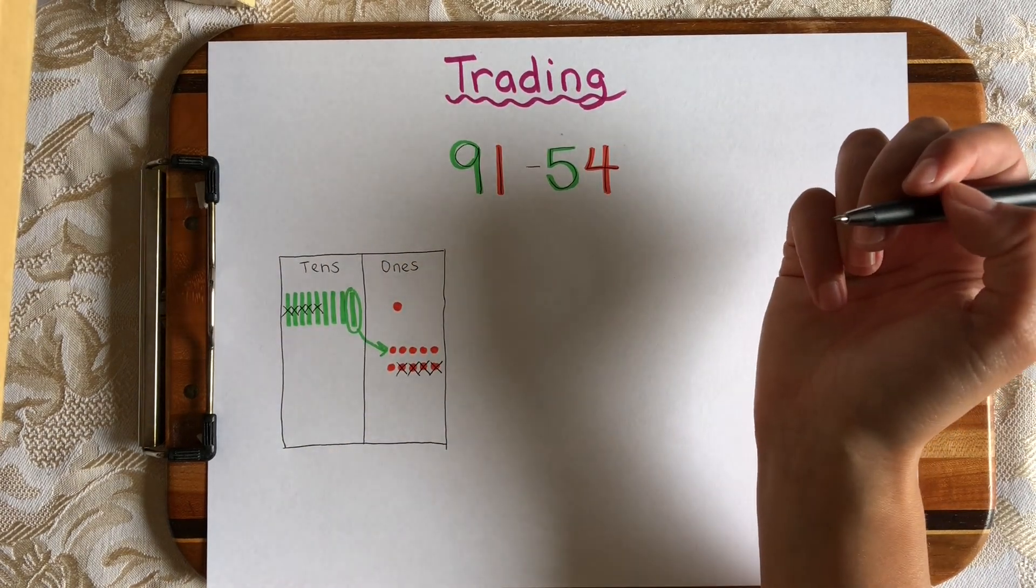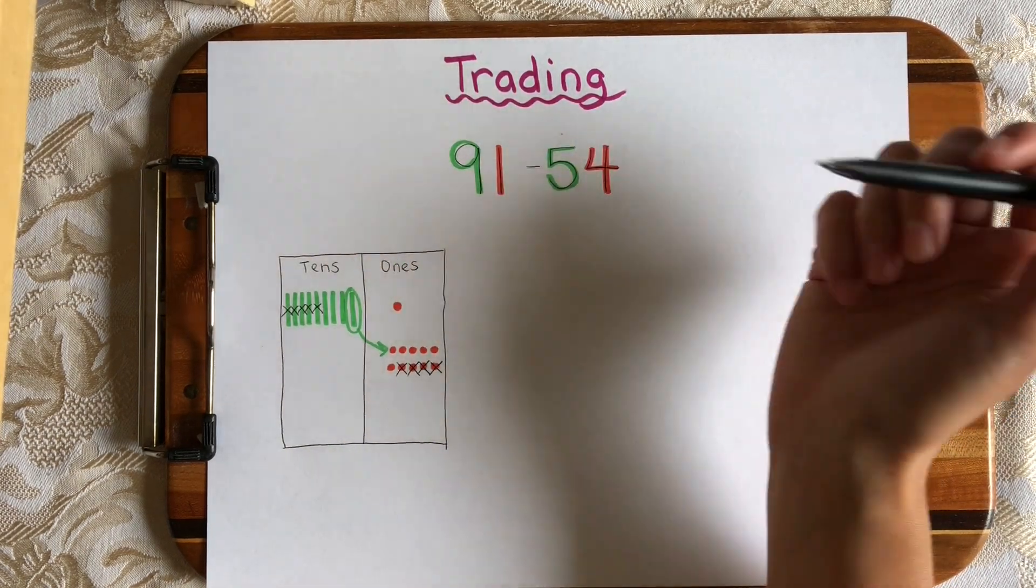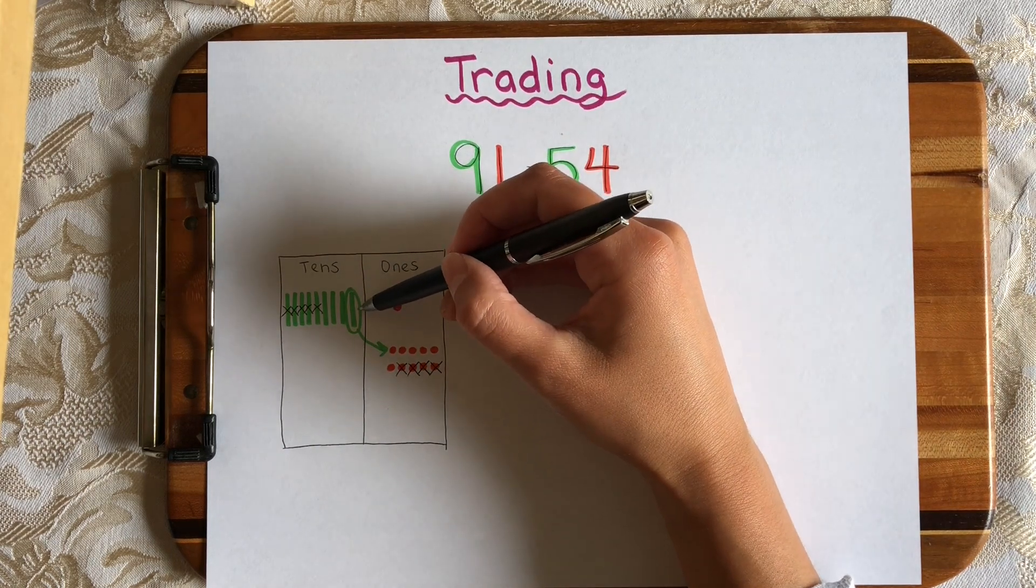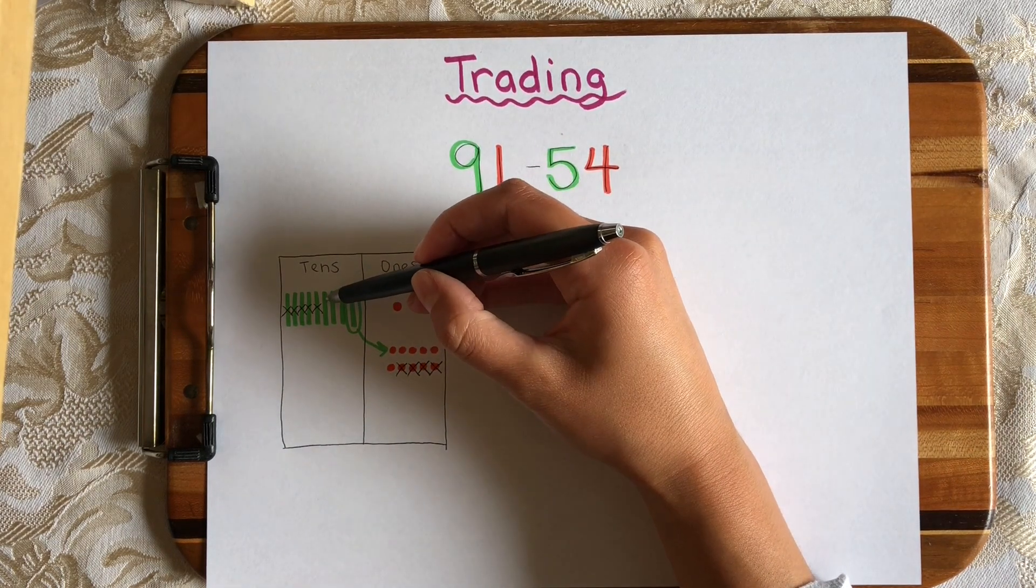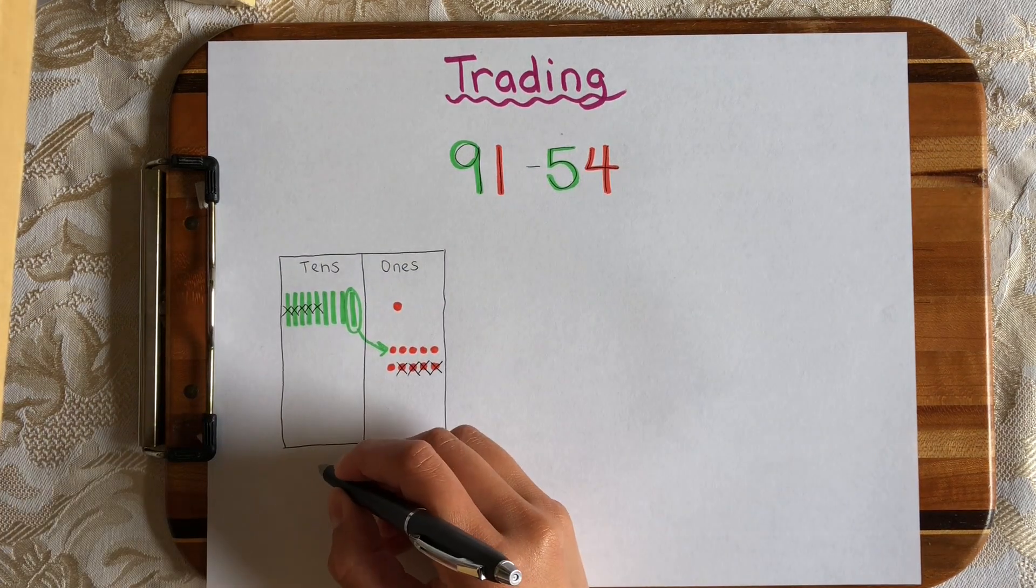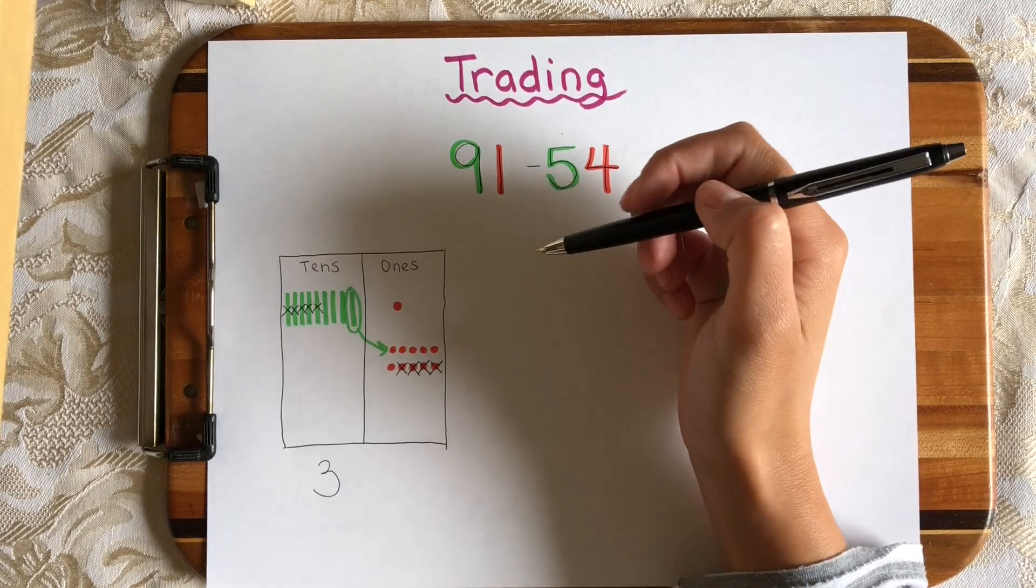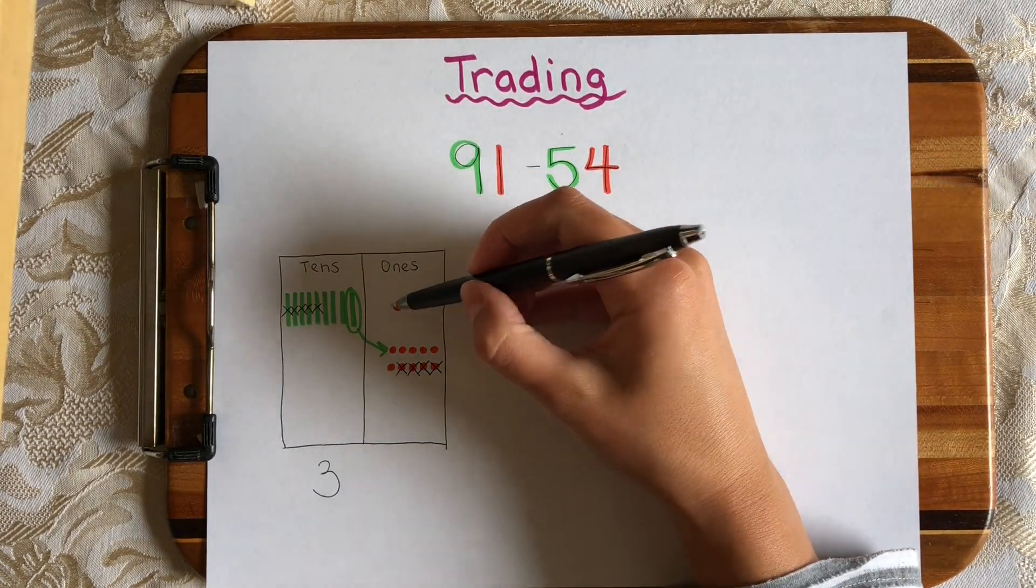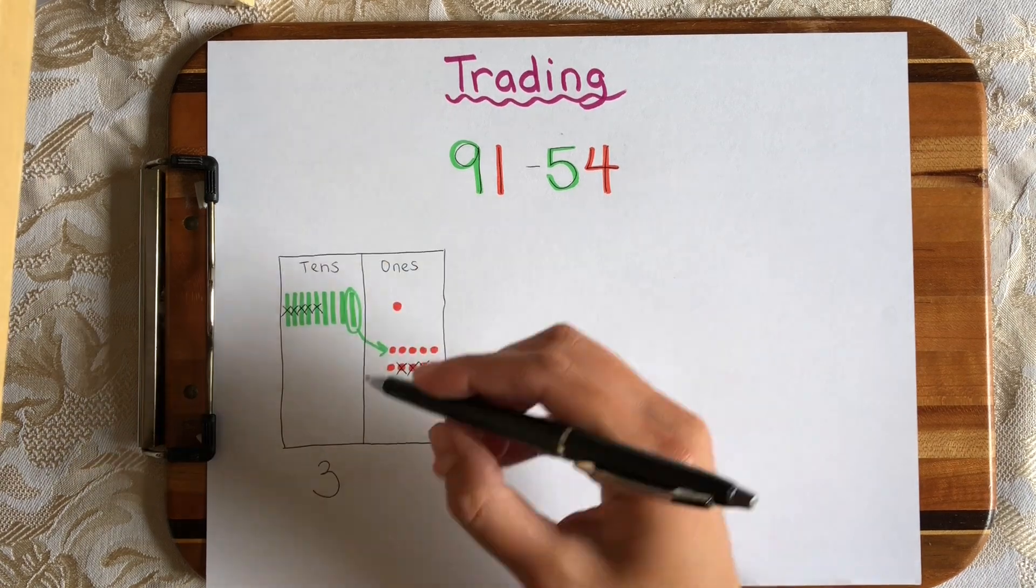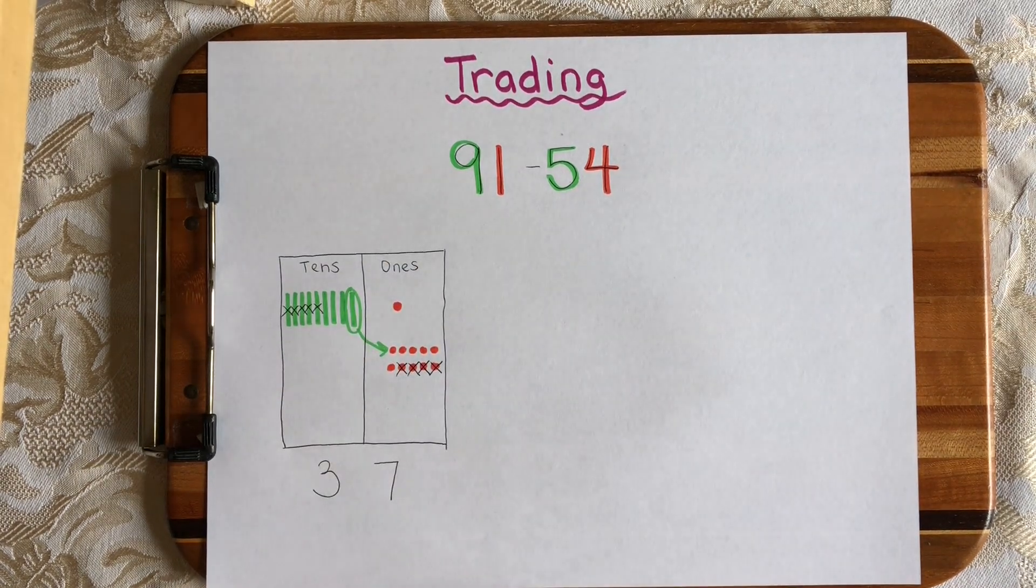Now let's see what's left so that we can see the difference between 91 and 54. So remember this one really isn't in the 10s house anymore because we traded it. So we're going to have 1, 2, 3 tens still there and let's see how many 1s we have left over. 1, 2, 3, 4, 5, 6, 7 ones. So that means the difference between 91 and 54 is 37.